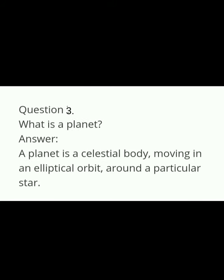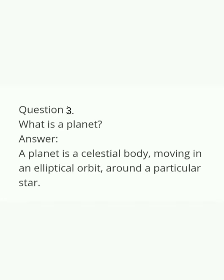Question three: What is a planet? Answer: A planet is a celestial body moving in an elliptical orbit around a particular star. Celestial body means all the objects that we can see in the sky. Planet is also a celestial body because we see it in the sky.